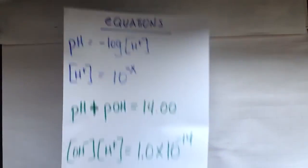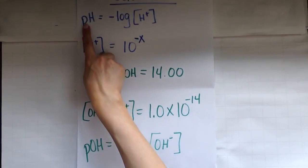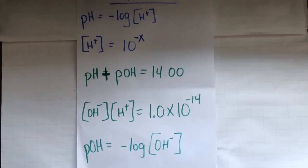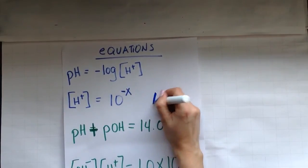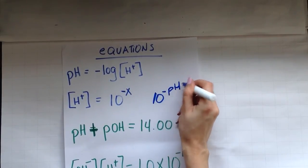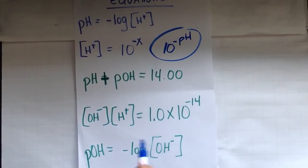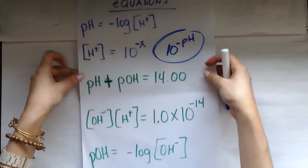Here are some other equations we're going to be using. We just, we talked about the pH one. You know this. We talked about this one right here. Maybe we can even say 10 to the negative pH to be more specific instead of 10 to the negative X. And here are some new ones in green.